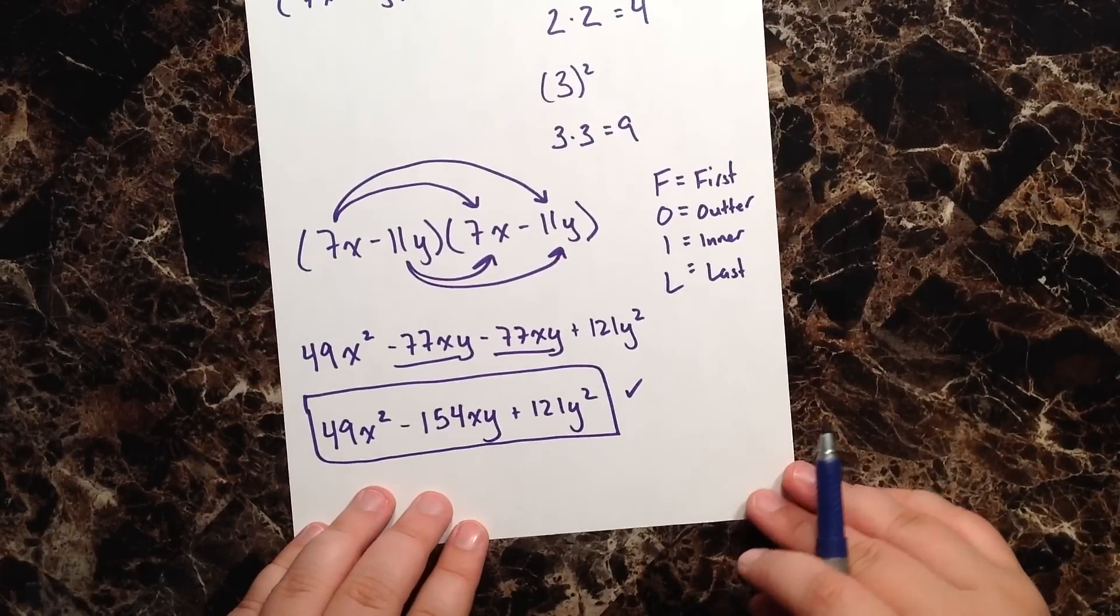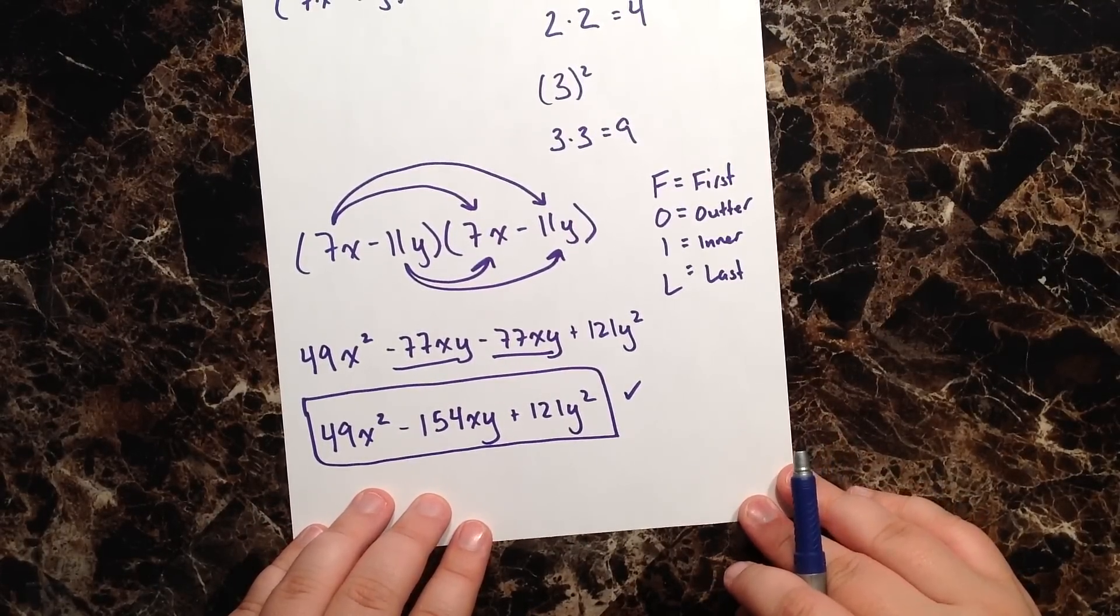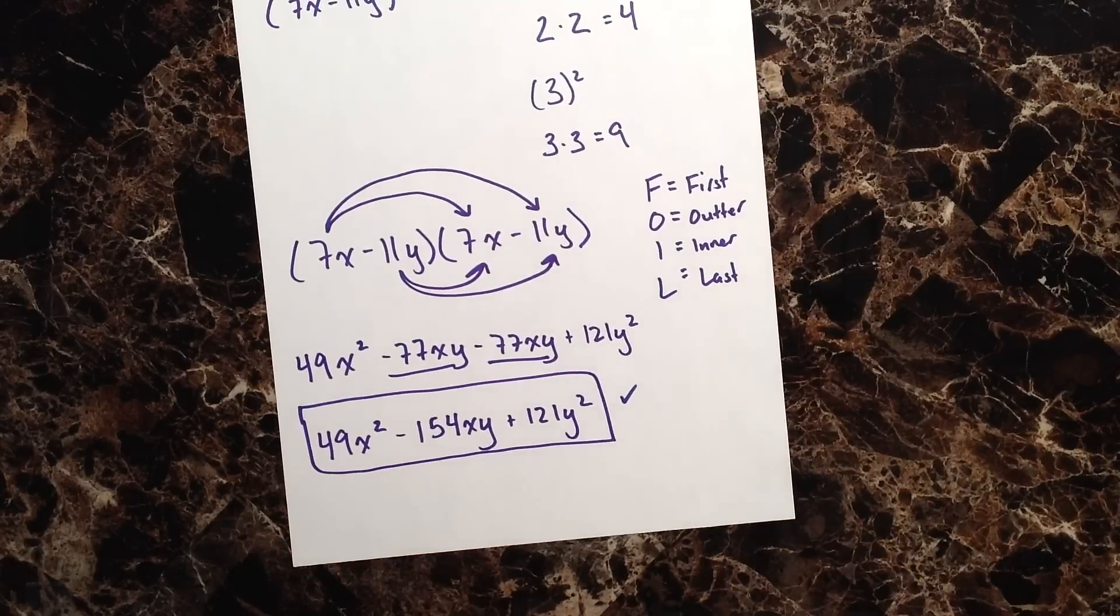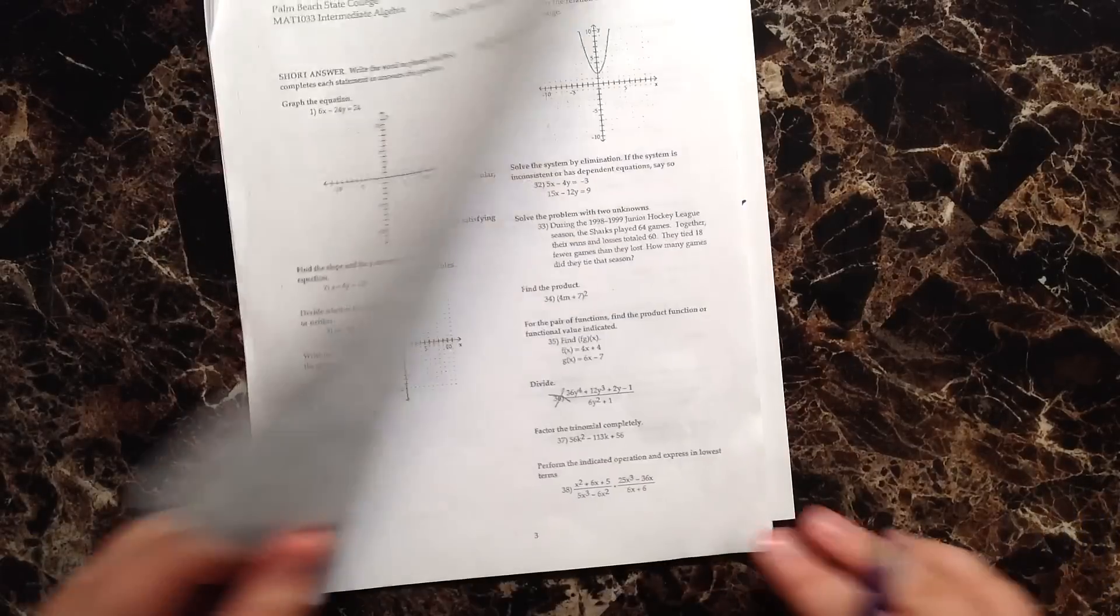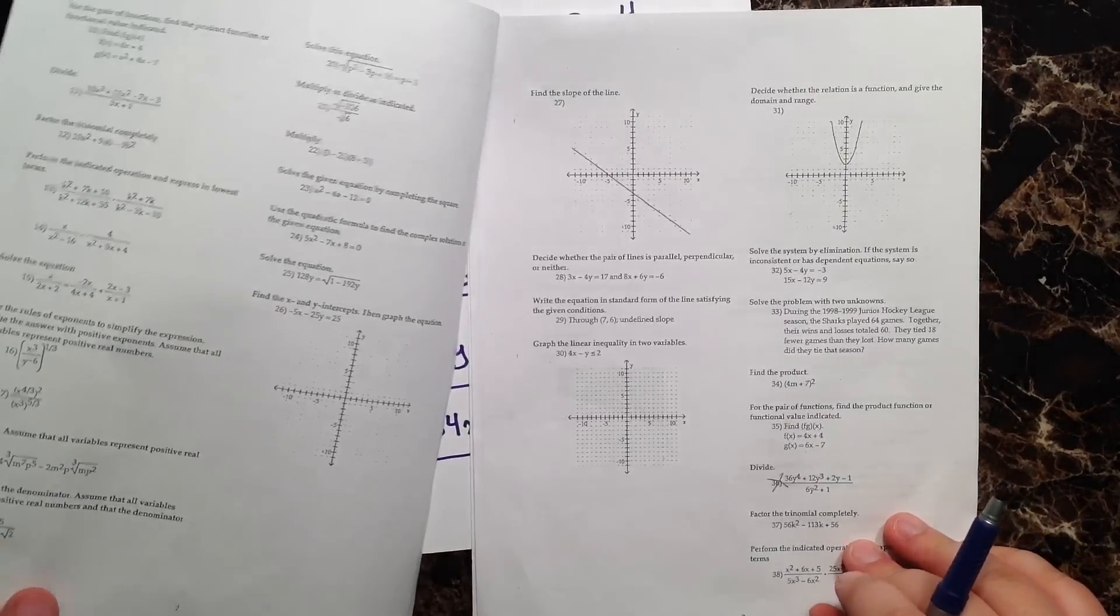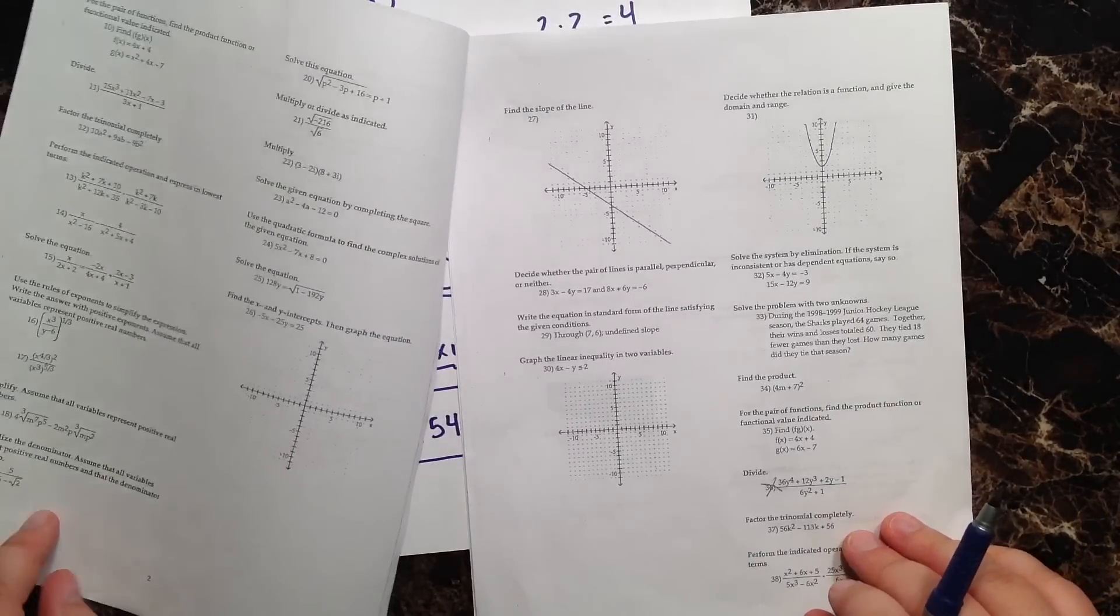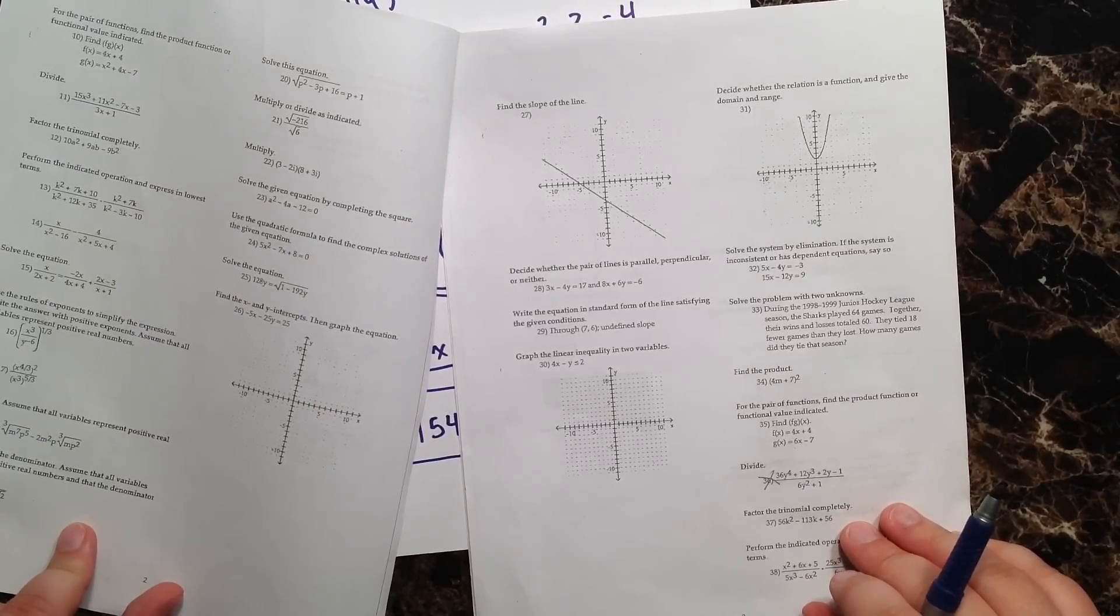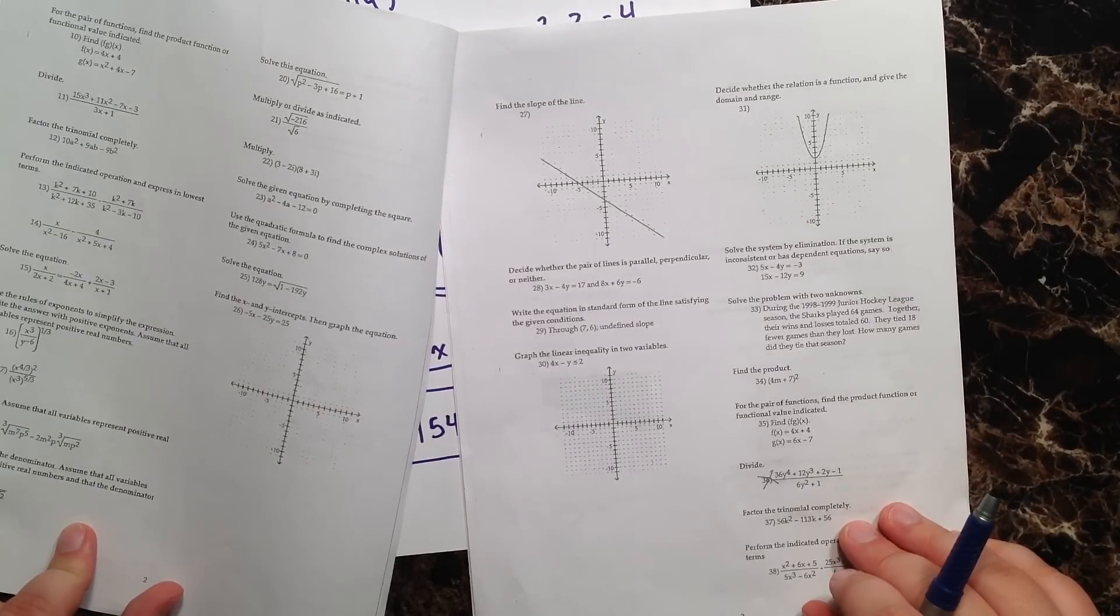At any rate, that was question number nine. We are going to be moving on to question number 10, which is on our second page, so I hope to see you there. Again, this is Joe Brownlee and you just watched a review for the intermediate algebra final exam. Thanks again for watching.